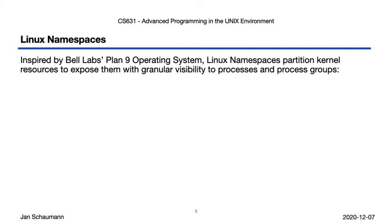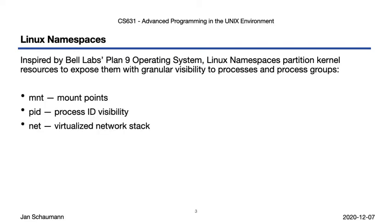The different types of resources made available via namespaces are: mount points; process ID visibility; a virtualized network stack, whereby each namespace has its own set of IP addresses, its own routing table, firewall rules, etc.; and System V IPC visibility — semaphores, shared memory, and message queue kernel structures.